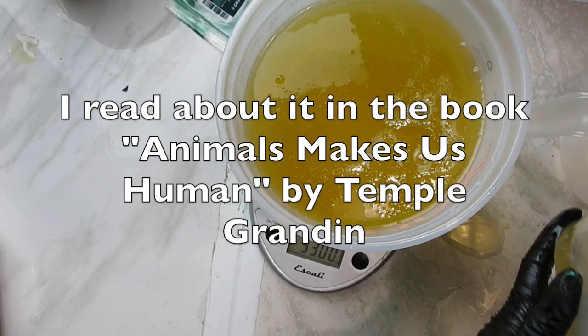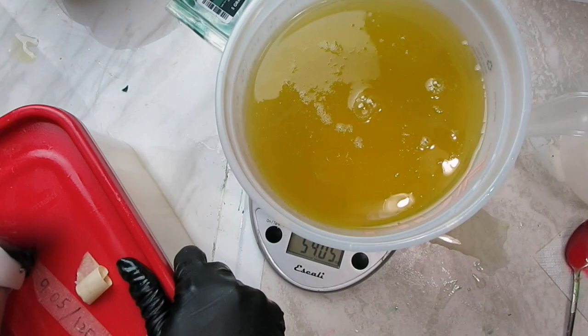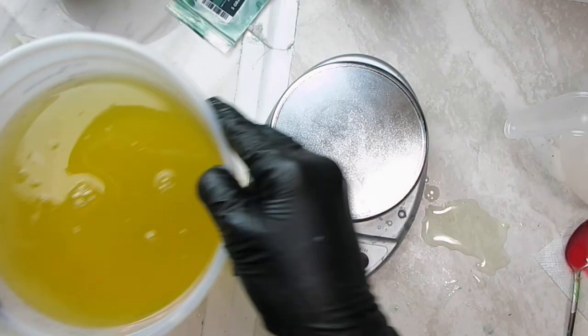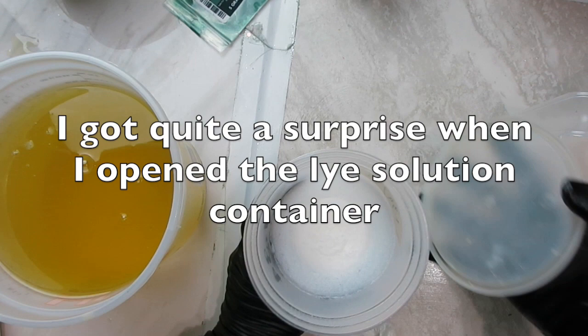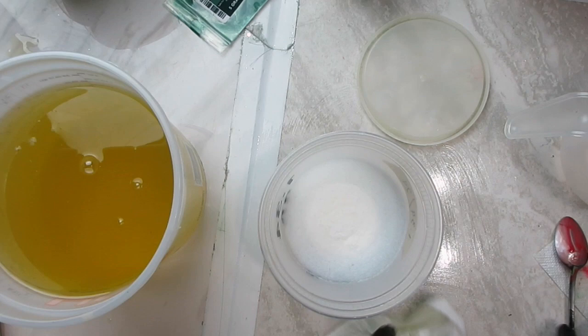I need about 54 ounces of oils because I'm making this into a slab mold, so it's going to be quite a big batch. Here I have the lye water solution, which to my surprise had turned to gel, and this was a first for me.